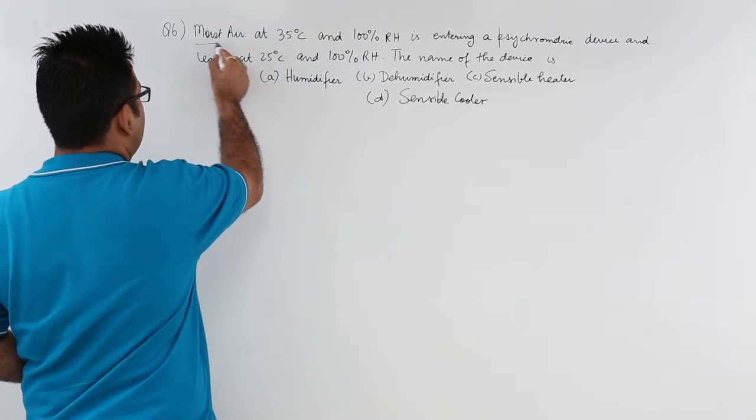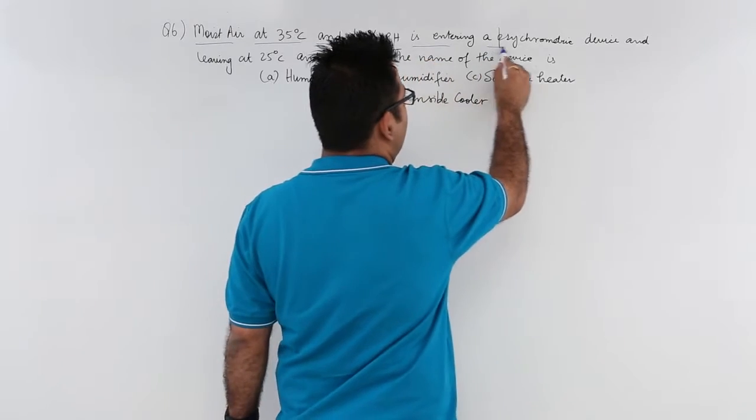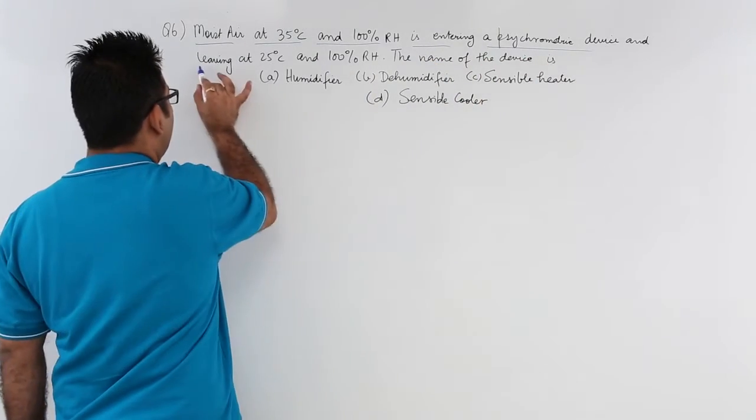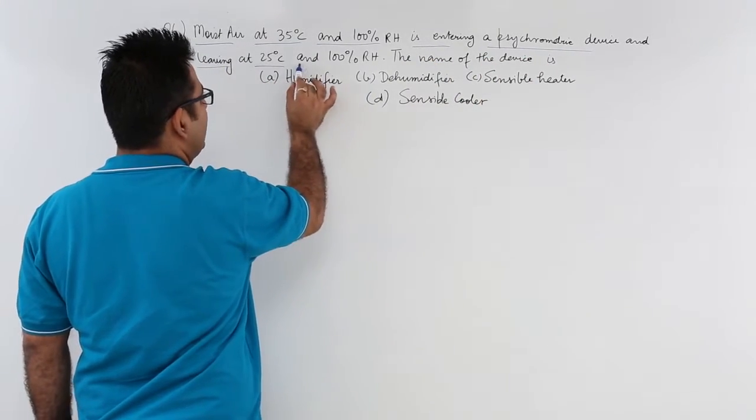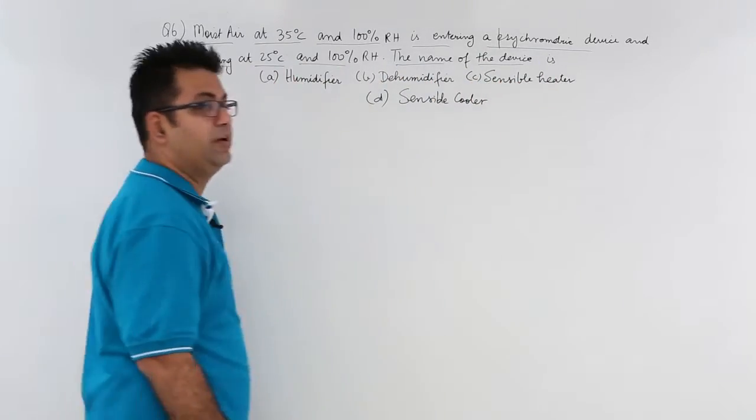Now the question says moist air at 35 degrees Celsius and 100% RH is entering a psychrometric device and leaving at 25 degrees Celsius and the same RH. Name the device. What is the name of your device?